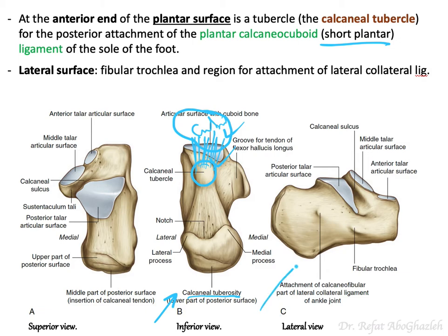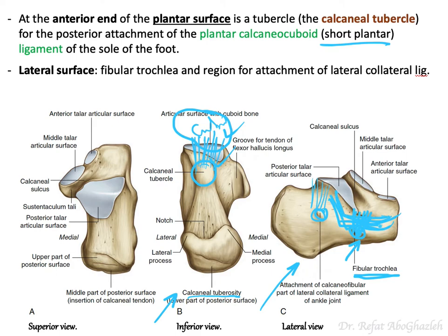Looking at the lateral surface of the calcaneus, you will see two small protruding structures. The first is the peroneal tubercle, also called the fibular trochlea. The second is for the lateral collateral ligament with the fibula. The tendons of fibularis longus and fibularis brevis are held to the fibular trochlea by a small ligament — peroneal and fibular are equivalent terms.